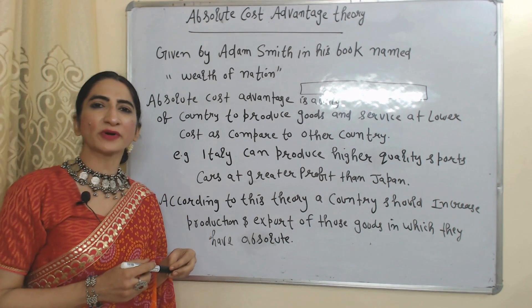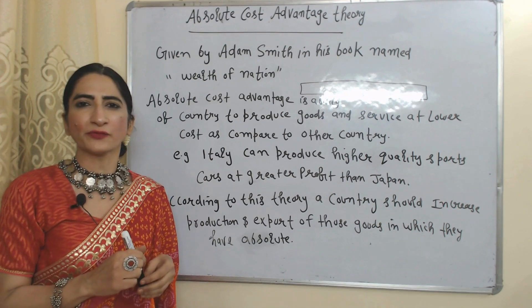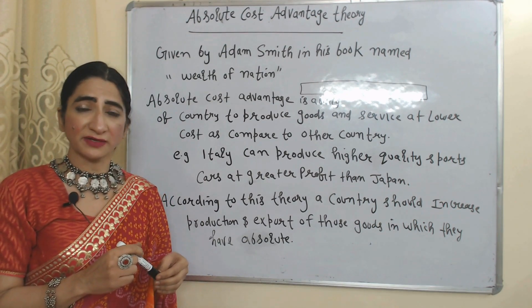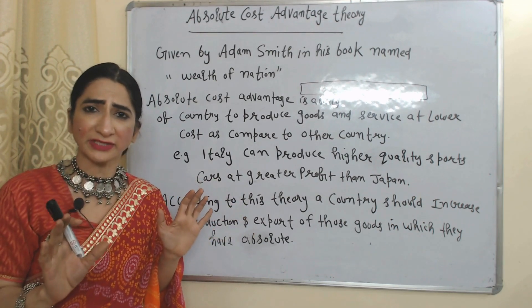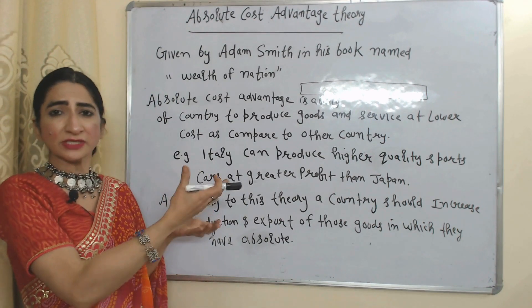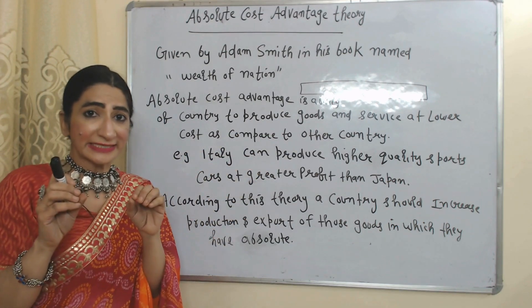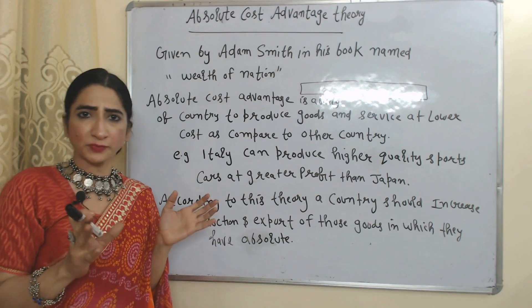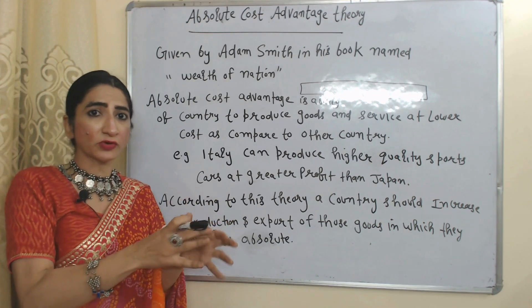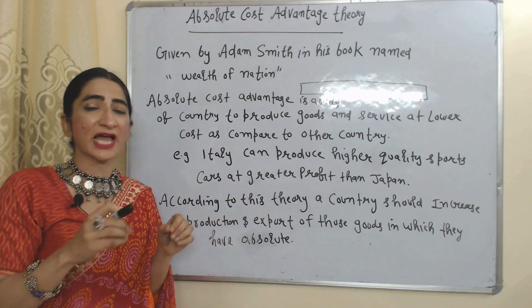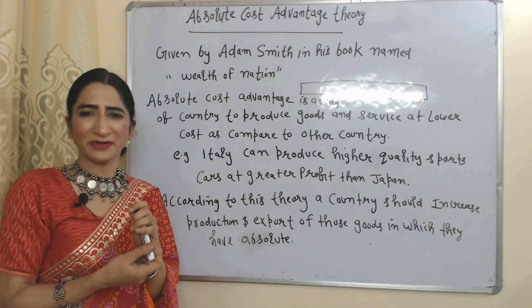Now we are going to talk about absolute cost advantage theory. This theory is given by Adam Smith in his book named Wealth of Nations. Absolute cost advantage is the ability of a country to produce goods at lower cost as compared to other countries. For example, Italy can produce high quality sports cars at greater profit as compared to Japan. So Italy has absolute cost advantage in production of sports cars. According to this theory, a country should increase production and export of those goods in which they have absolute cost advantage, and import those goods in which they don't have any absolute cost advantage.